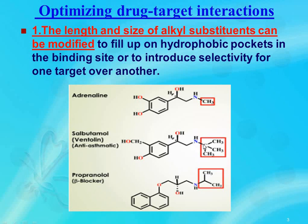The receptor selectivity is dependent on the size of the alkyl groups present on the nitrogen atom. As the size of the alkyl group increases, the activity of the alpha-receptor decreases and the activity of the beta-receptors increases. Beta-receptors have a large lipophilic binding pocket, and the tertiary butyl group gives the selectivity towards the beta-receptor. Substitution of a branched and bulky propyl group on the amino group provides nucleophilicity and helps in the interaction with the hydrophobic pocket located in the binding site, making propranolol a drug which is a beta blocker.